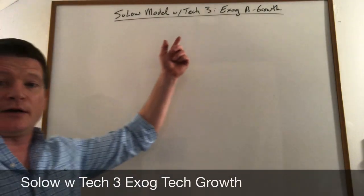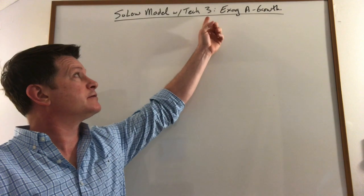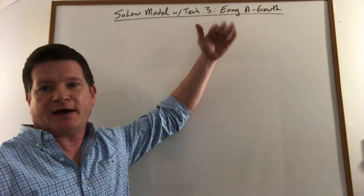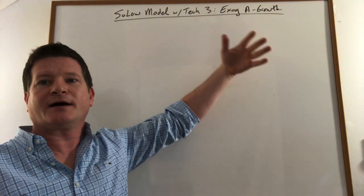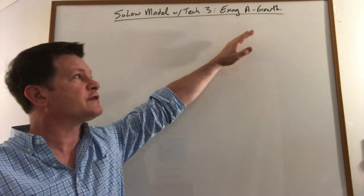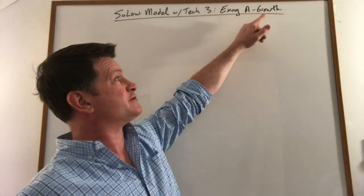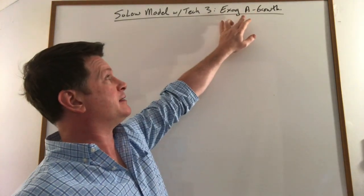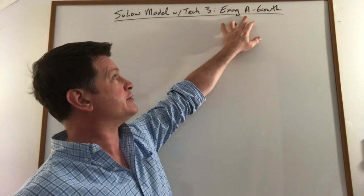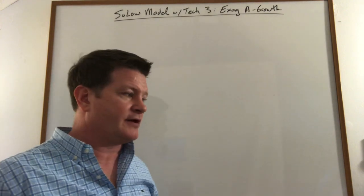This lecture looks at the SOLO model with technology included. It's the third one in the series after we cover some of the overview of what kinds of models you could have. So this is the only one of two that we're actually going to cover explicitly. In this case, we're going to cover the simplest form and let A, our technology parameter, just increase exogenously. So we want to look at how we include that into the model.